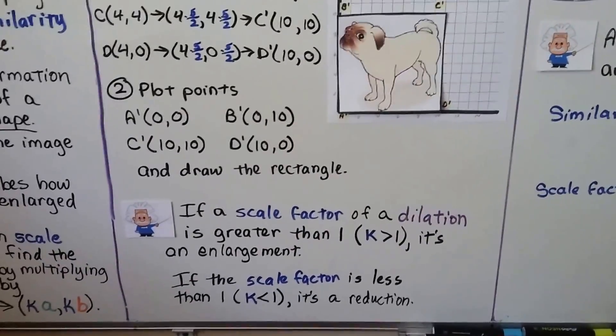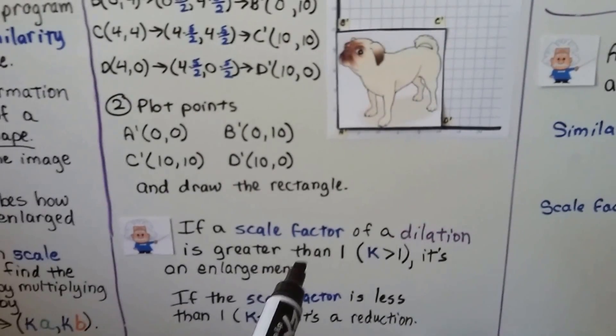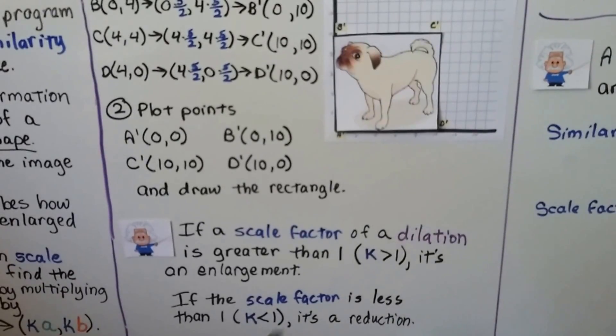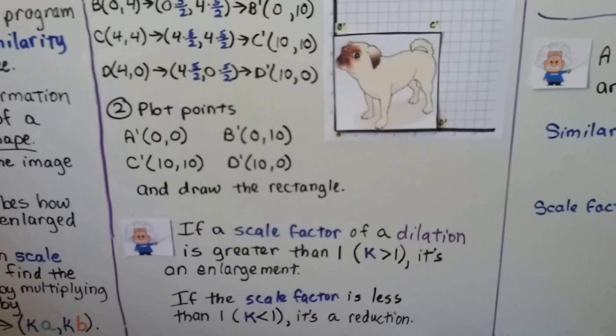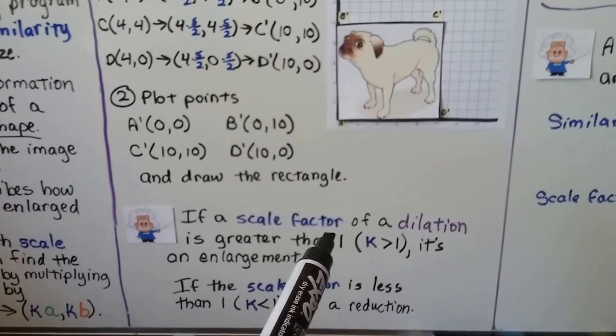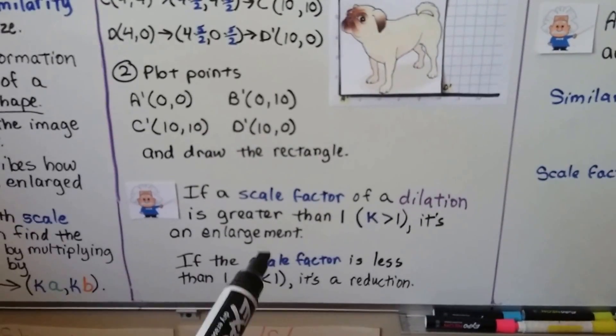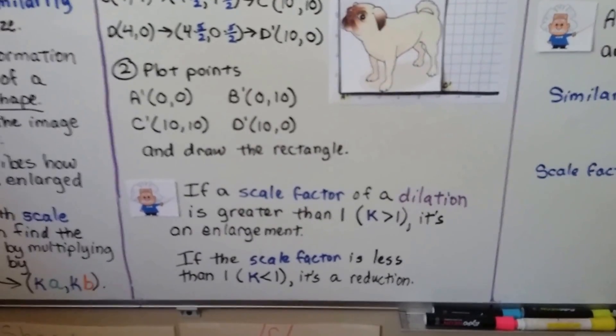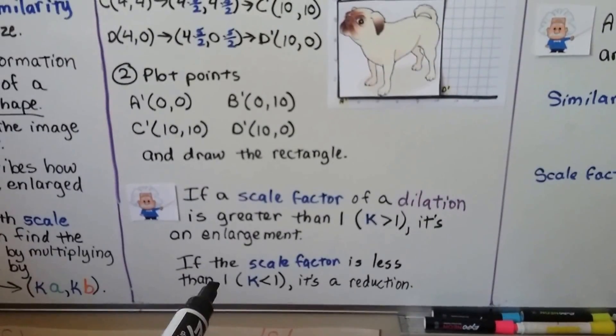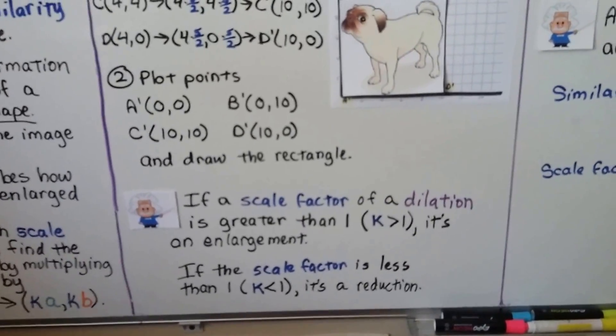If a scale factor of a dilation is greater than one, it's an enlargement. One times two, it's now two times larger. If the scale factor is less than one, K is less than one, it's a reduction. If we multiply it by half, we're cutting the size of it in half.